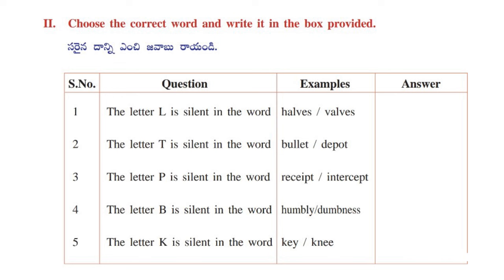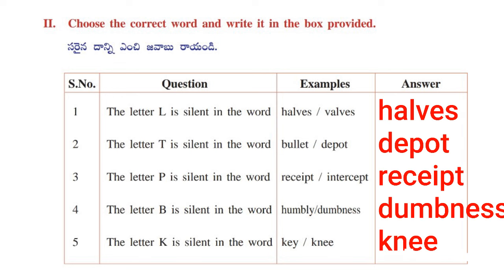Let's move on to the second roman. Choose the correct word and put it in the box provided. First one: The letter L is silent in the word 'half'. Next: The letter T is silent in the word 'depot'. Next: The letter P is silent in the word 'receipt'. Next: The letter B is silent in the word 'dumbness'. Next: The letter K is silent in the word 'knee'.